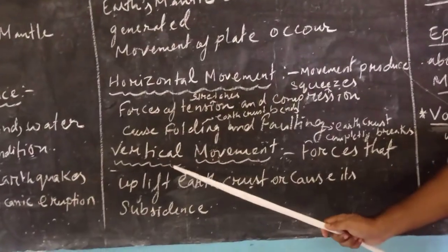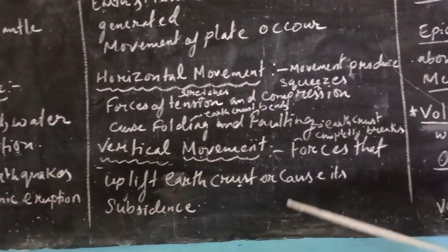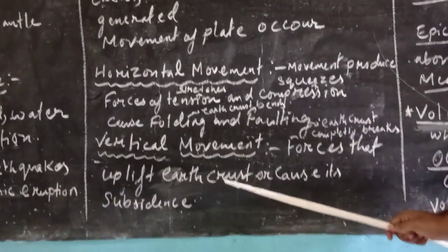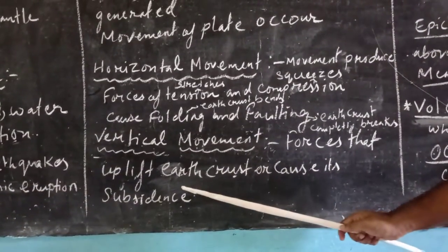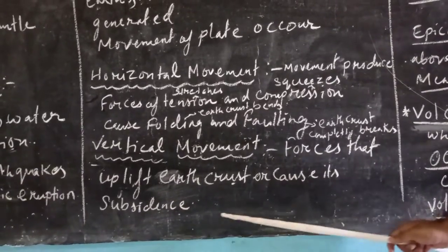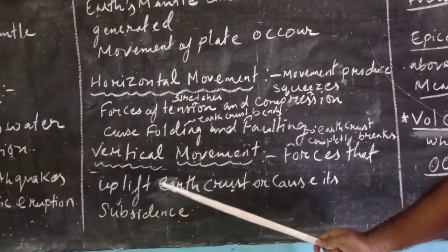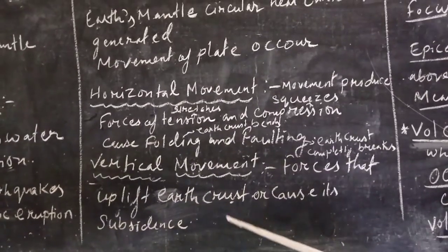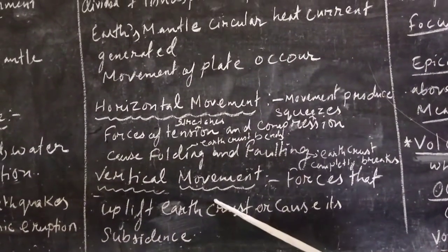Next, let us look. Vertical movement. Vertical movements are forces that uplift Earth's crust or cause subsidence. Uplift means at a time it can make mountains also, and at the same time it can make lowlands or seas also. So that is vertical movement, forces that uplift Earth's crust or cause subsidence.